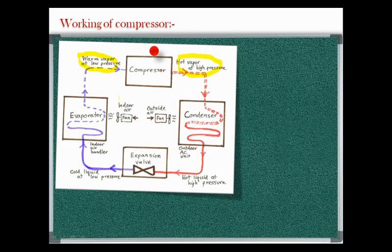The suction line pulls the low pressure and low temperature refrigerant vapor from the evaporator. It creates a pressure difference in the system by pulling in low pressure, low temperature vapor from the evaporator to the suction line and increasing it to a high pressure, high temperature superheated vapor. This pressure difference is what makes the refrigerant flow in a refrigeration cycle.